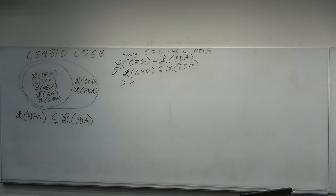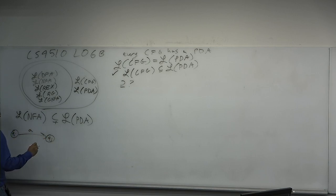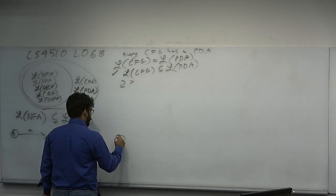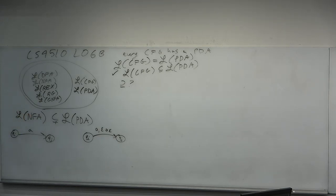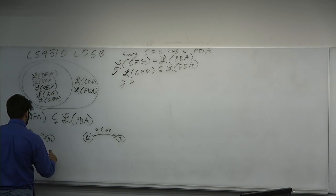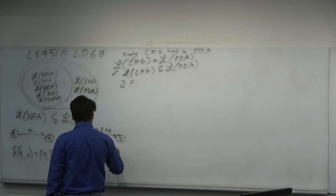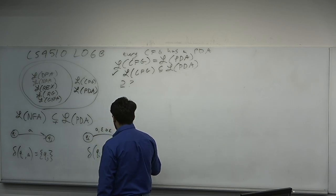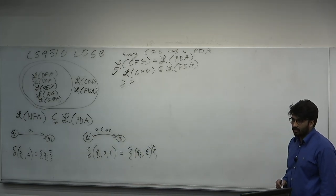How does this proof work? Give me a process to convert an NFA to a PDA. You just ignore the stack. So for every transition from Q_i to Q_j reading an A in the NFA, in the PDA we go from Q_i to Q_j reading an A, popping nothing and pushing nothing. Notationally, in the NFA you write delta(Q_i, A) = {Q_j}; in the PDA you write delta(Q_i, A, epsilon) = {(Q_j, epsilon)}.